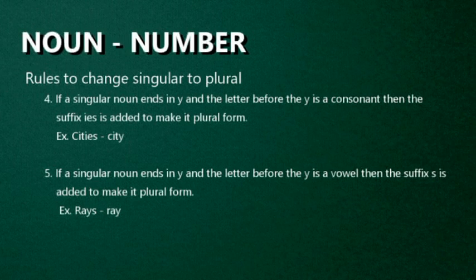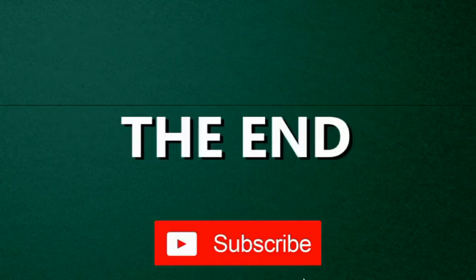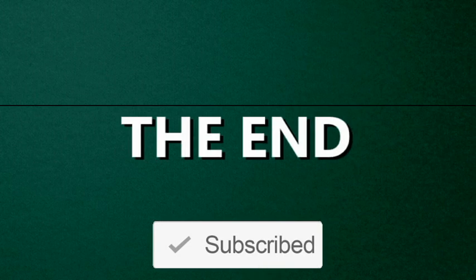If a singular noun ends in Y and the letter before the Y is a vowel, then the suffix S is added to make it plural. For example: potatoes is the plural form of potato, which ends with a vowel, so we just add S. So I hope all of you have understood. Today we have studied a detailed form of Noun. Don't forget to subscribe and follow my channel.